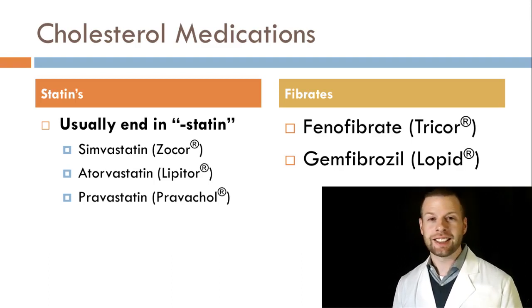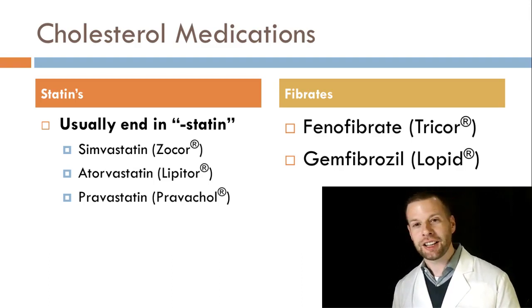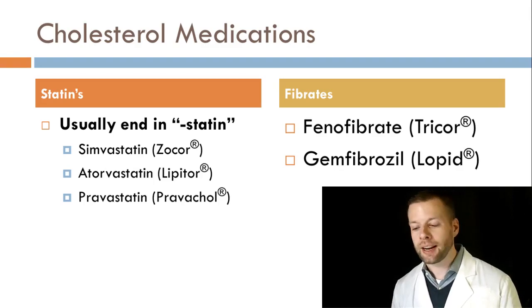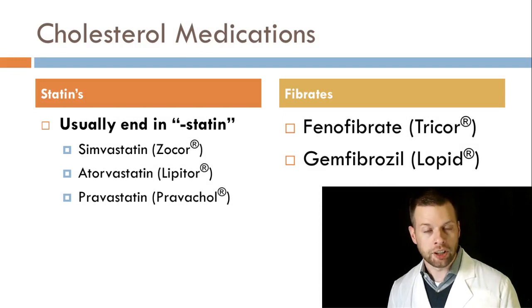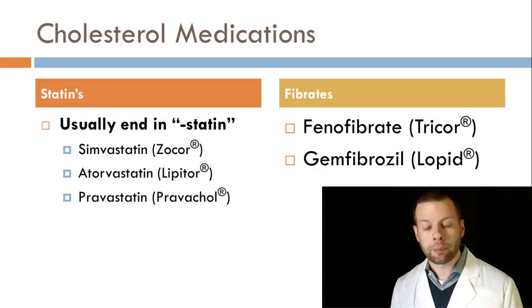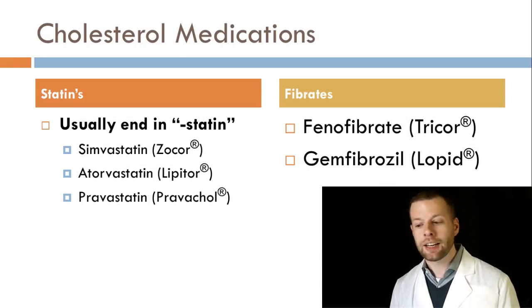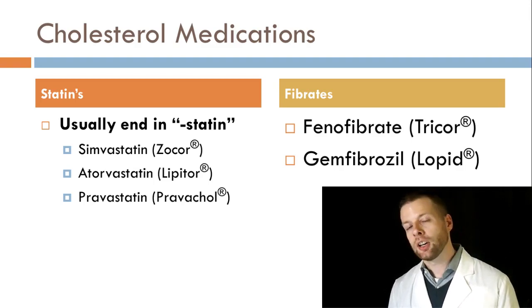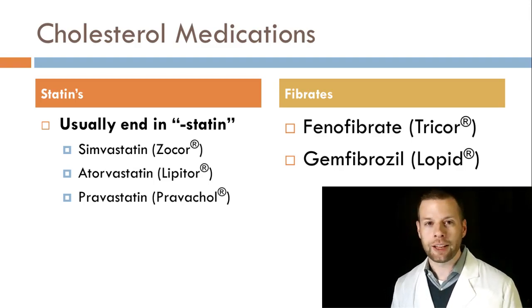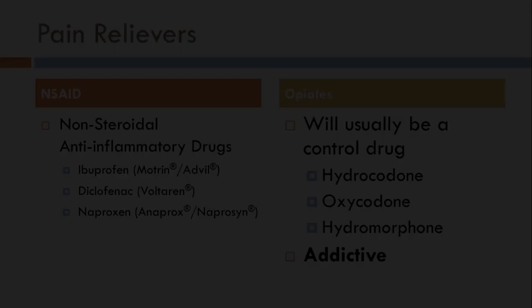On the other side, unfortunately there's no consistent ending to help remember the fibrates. You'll just have to memorize phenofibrate and gemfibrozil, known as the fibrates, with brand names Tricor and Lopid. No fancy ending here to help us remember these.